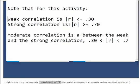If the correlation was 0.82, well 0.82 is greater than 0.70, so we'd have a strong correlation.